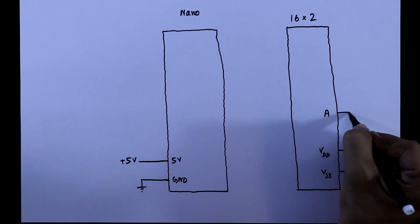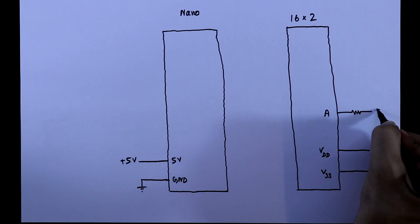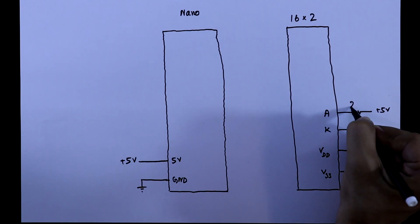Anode pin of the LED will be connected to the plus 5V through 220 ohms resistor and cathode will be connected to the ground.